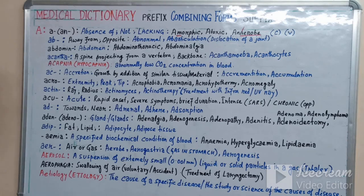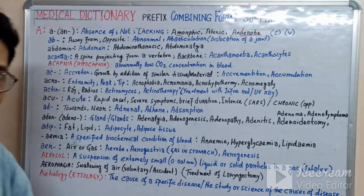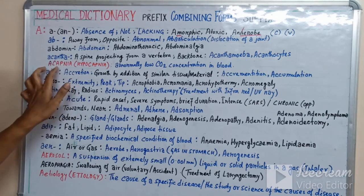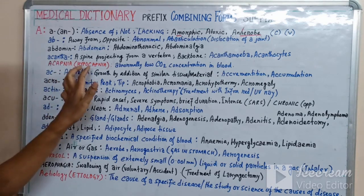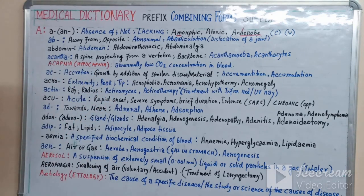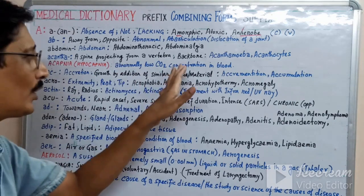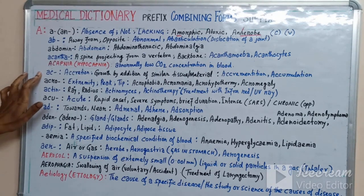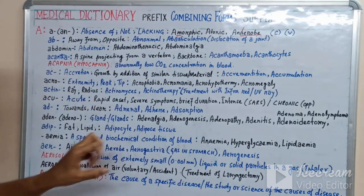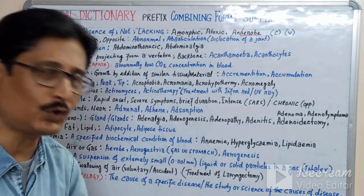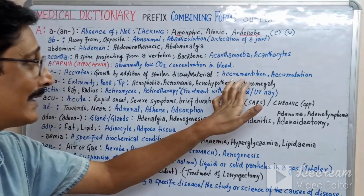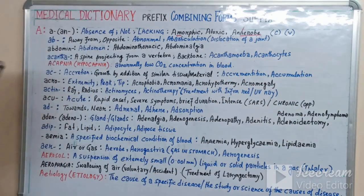'Acapnia' — the 'ac' is sometimes omitted, giving 'apnea' — means abnormally low carbon dioxide concentration in the blood. The prefix 'hypo-' gives 'hypoapnea.' The prefix 'ac-' also means accretion, meaning growth by addition of similar tissue or material, such as accumulation.